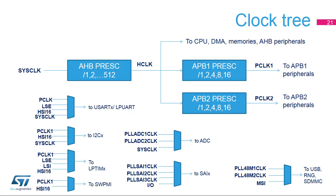Several peripherals have their own clock independent from the system clock. This is the case for the USARTs, low-power UART, I2Cs, low-power timers, single-wire protocol master interface, ADC interface, serial audio interfaces, USB, random number generator, and SDMMC interface. All of these clocks can be selected from the internal or external oscillators.